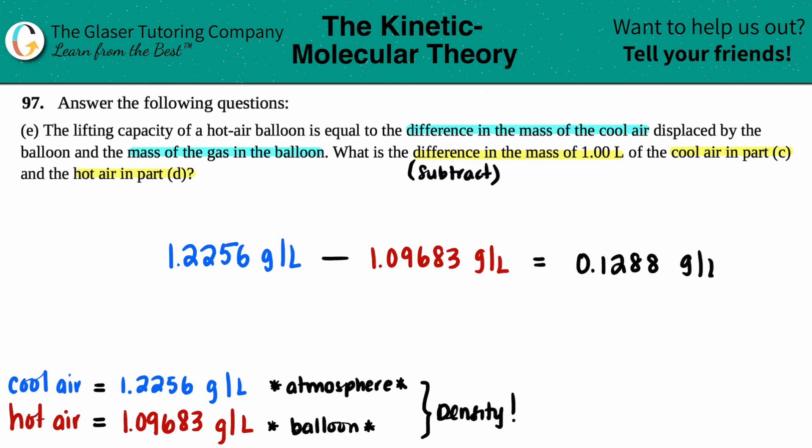But does anyone care at this point? Absolutely not. Anyway, so what's the difference in the mass of one liter of cool air? The difference in the mass is 0.1288 grams per the one liter. So whether you want to just leave it as a gram and then say of one liter, or you could just leave it as this, technically each answer is fine.